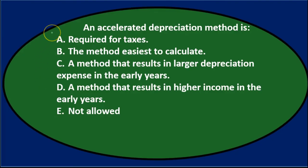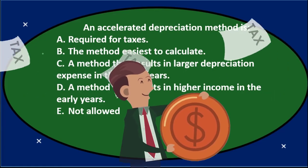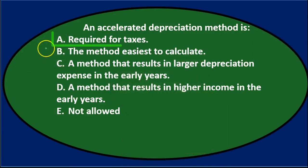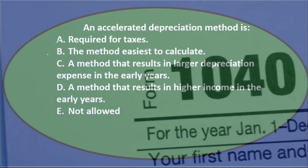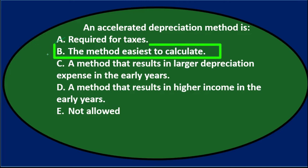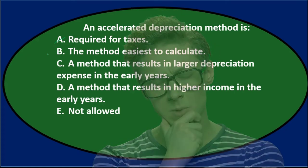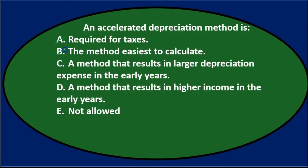Let's go through this using process of elimination. A. required by taxes — taxes often do use an accelerated method, but it's not required; we could use a straight-line method, so that's not necessarily true. B. the method easiest to calculate — probably not. If we thought about the easiest method to calculate, we'd be thinking straight-line, which would probably be the first method that comes to mind.